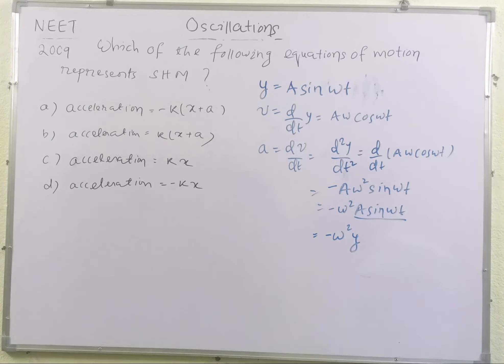So acceleration for a simple harmonic motion is always written as a = -ω²y. This means the acceleration is directly proportional to the displacement. Or if we multiply m, force is directly proportional to the displacement. There is a minus sign here. This minus sign implies that the motion is always directed towards a particular point.